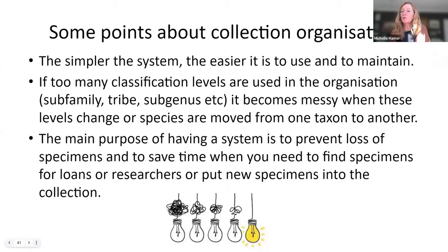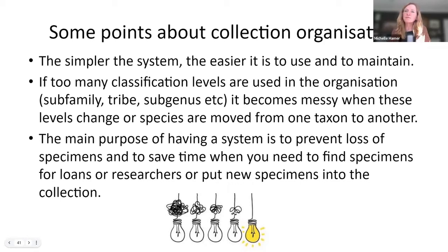It doesn't matter what system you use, but remember the simpler the system, the easier it is to use and maintain. If you start having too many classification levels — subfamilies, tribes, subgenus — it becomes very messy when those levels change through research. The main purpose of having a system is to prevent loss of specimens and to save time when you need to find something to send out on loan or put new specimens into the collection. If it takes ages to figure out how to do that, it's a complete waste of time.